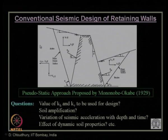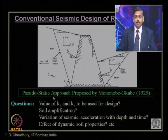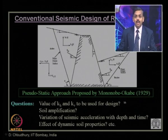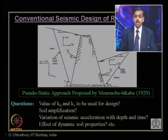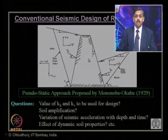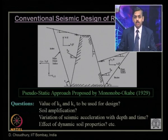We have seen the conventional seismic design of retaining wall, which is the pseudo-static approach as proposed by Mononobe and Matsuo in 1929 and by Okabe in 1926, commonly known as the Mononobe-Okabe method of 1929. This is the pioneering work for computation of seismic earth pressure on retaining walls. The Mononobe-Okabe method is nothing but an extension of Coulomb's static earth pressure theory.